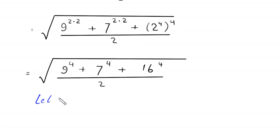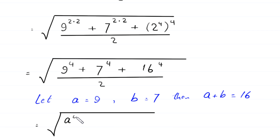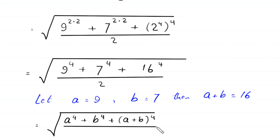Now we suppose that a is equal to 9 and b is equal to 7, then a plus b will equal 16. Substituting a, b, and a plus b, the expression becomes: square root of a to the power 4 plus b to the power 4 plus a plus b whole to the power 4, divided by 2.